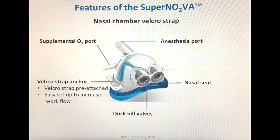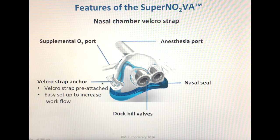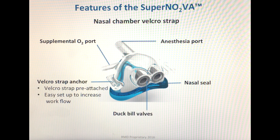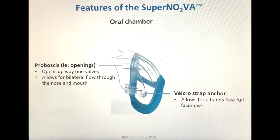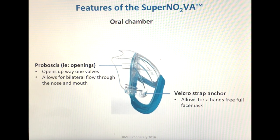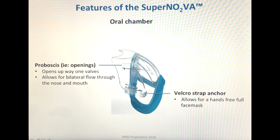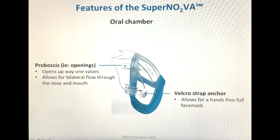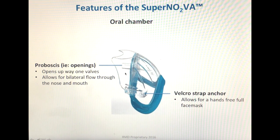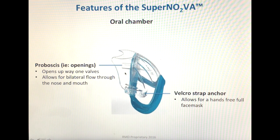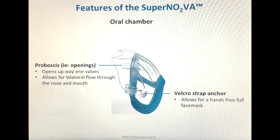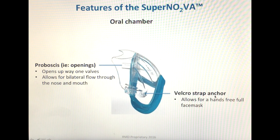A final unique feature of the Supernova's nasal chamber is the Velcro strap, which helps the clinician increase their workflow by allowing easy access and very quick setup since it comes pre-attached. The Supernova's first accessory is the oral chamber, which has two proboscis — essentially openings. When the oral chamber is inserted into the nasal chamber, these proboscis open the duct bill valves, allowing for bilateral flow through both the nose and the mouth, essentially acting as a full face mask. The oral chamber also has a Velcro strap, allowing for hands-free full face mask ventilation.